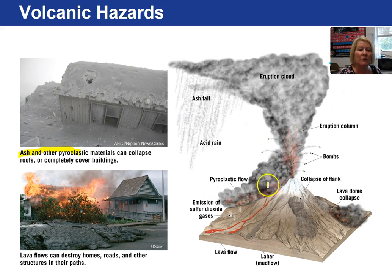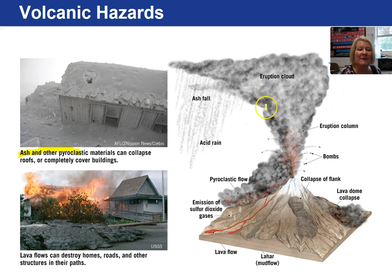Here's a picture of a stratovolcano with a pyroclastic eruption occurring — the material goes up in the air and collapses down on itself. And here's your pyroclastic flow — this is your nuée ardente.